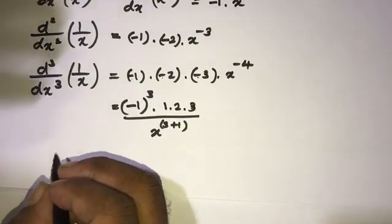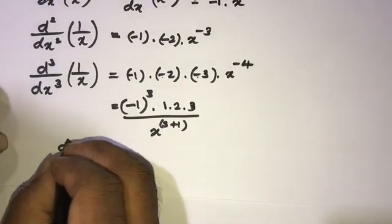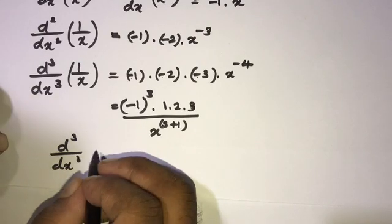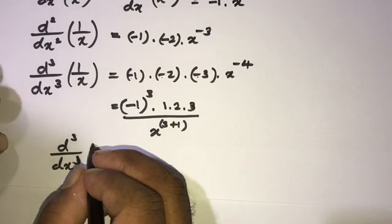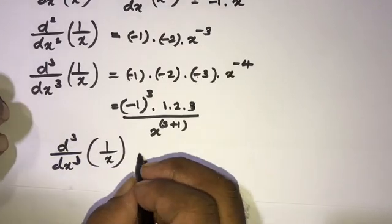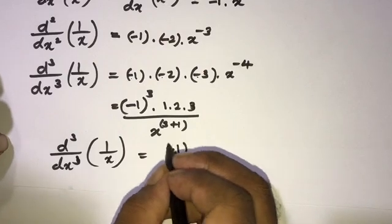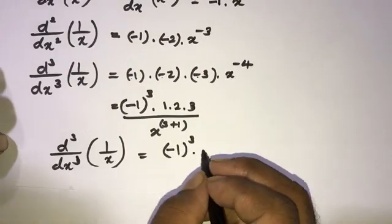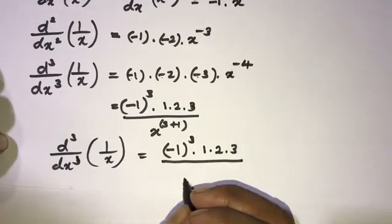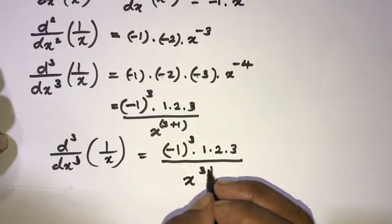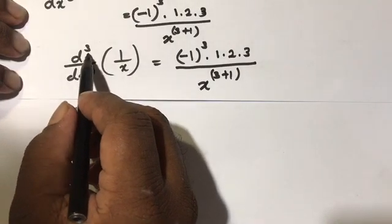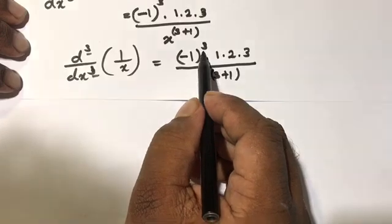Rewriting this, we have minus 1 to the 3rd power over x to the 3 plus 1 power. You can see the pattern: the exponent 3 appears in three places consistently.